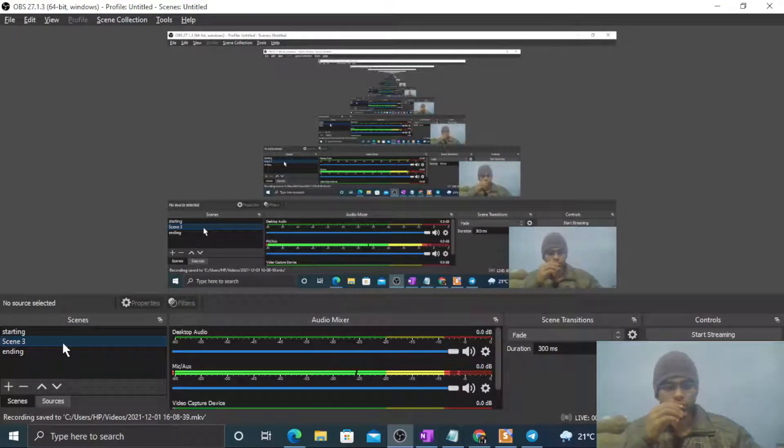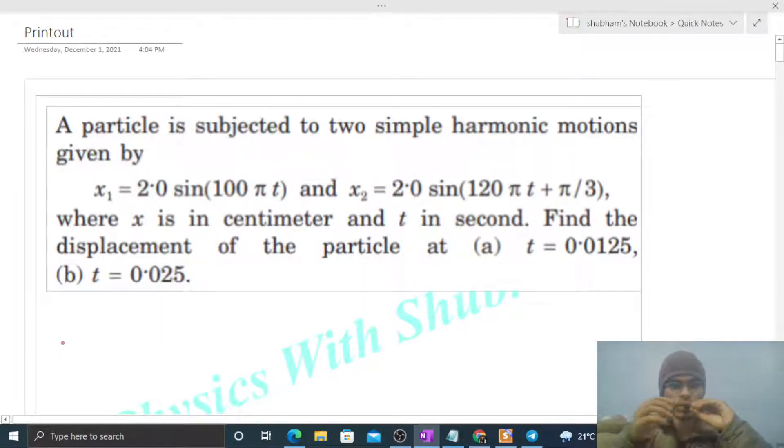Okay, hi everyone. Today let's discuss one interesting problem. It says the particle is subjected to two simple harmonic motions given by these two equations, SHM1 and SHM2, where x is in centimeter and t in second. Find the displacement of the particle at time equal to this one and time equal to this one.